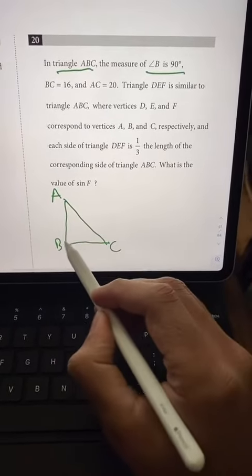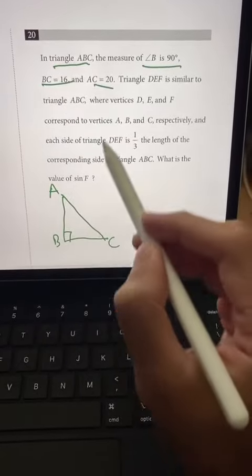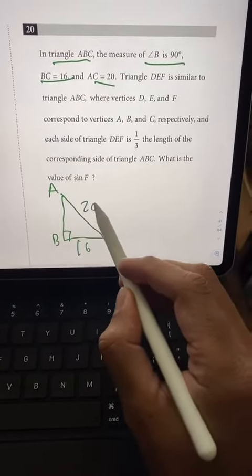A, B, C, and we've got our little right angle right there. BC is 16 and AC is 20.